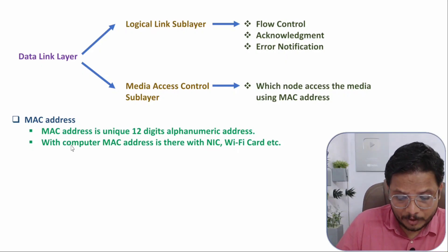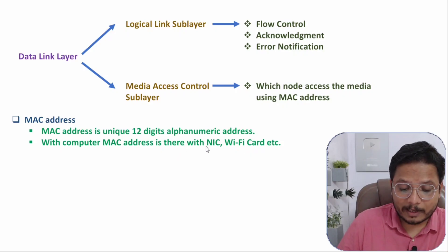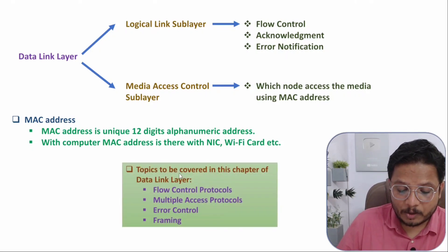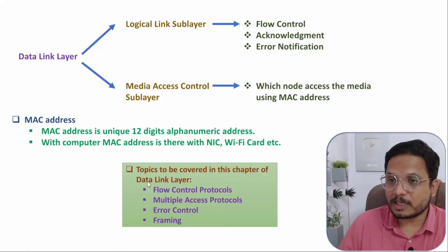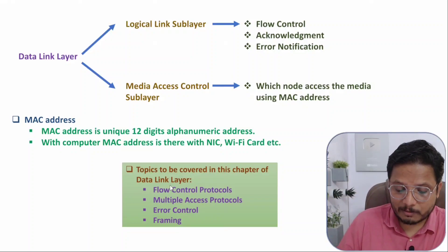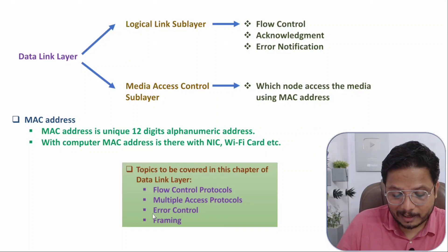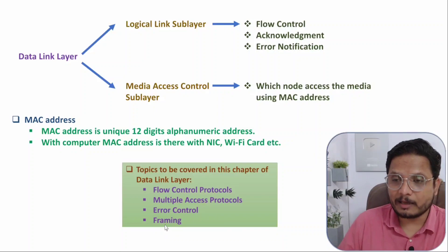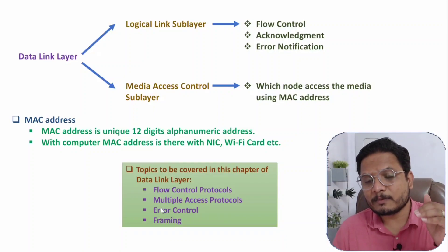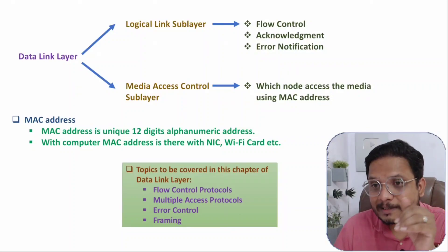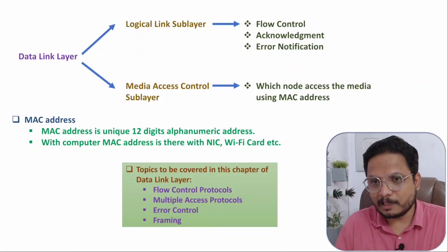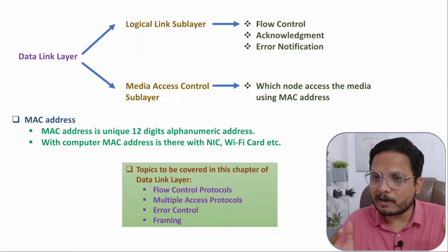For example, with any computer, there can be a Wi-Fi card or a Network Interface Card that has a MAC address. In this entire chapter on the Data Link Layer, I'll be discussing protocols based on flow control, multiple access, error control, and how framing works. All those topics will be covered in this chapter. If there's anything you would like to share, please note it down in the comment section. Thank you so much for watching.